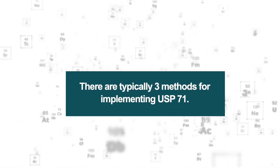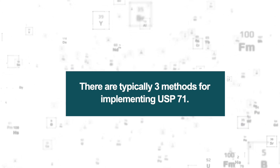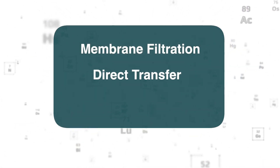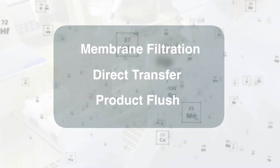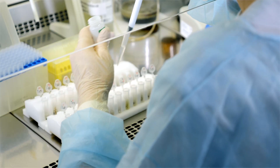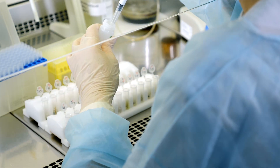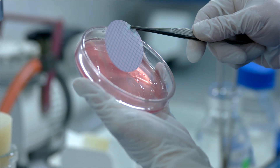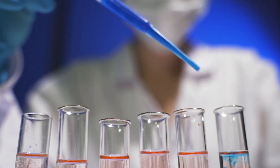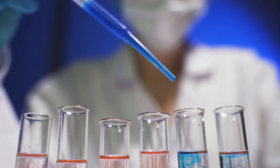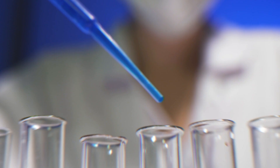There are typically three methods for implementing USP-71. These methods include membrane filtration, direct transfer, and product flush. Oftentimes, laboratories will perform method suitability for each specific product formulation to ensure that the appropriate method is chosen for testing.